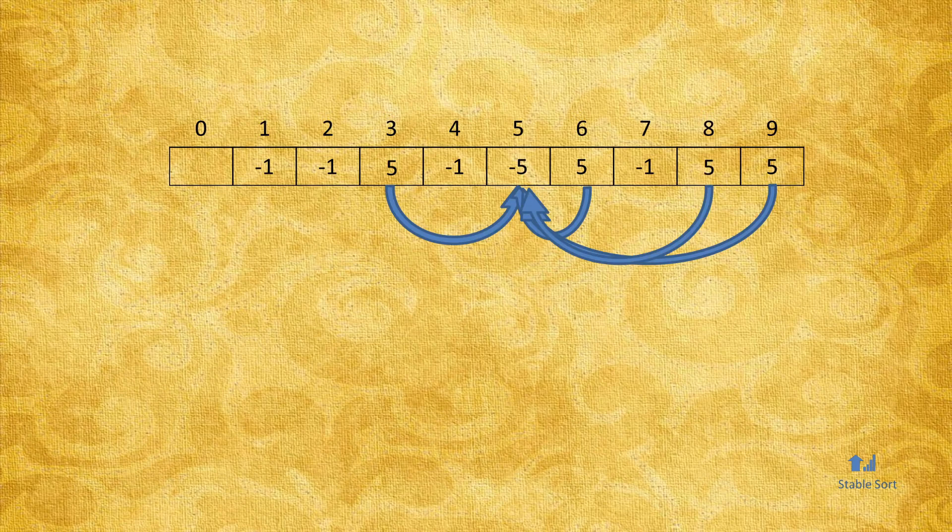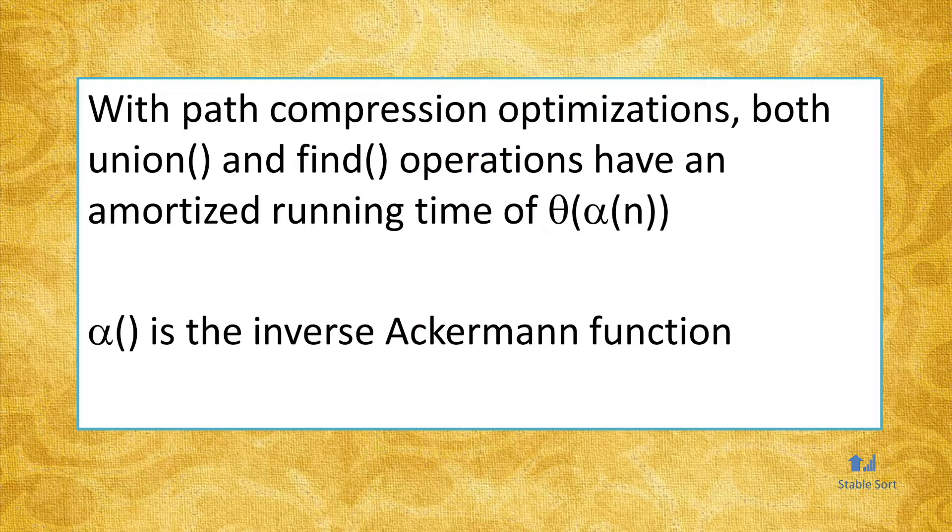While the find operation without optimizations results in O(n) running time, with path compression, the amortized running time is reduced to θ(α(n)). Here the alpha function is the inverse Ackermann function, which grows incredibly slowly. So, for all practical applications, it could be considered a constant factor, which makes Disjoint Set operations run in nearly amortized constant time.